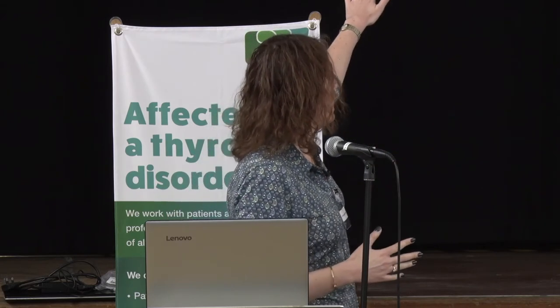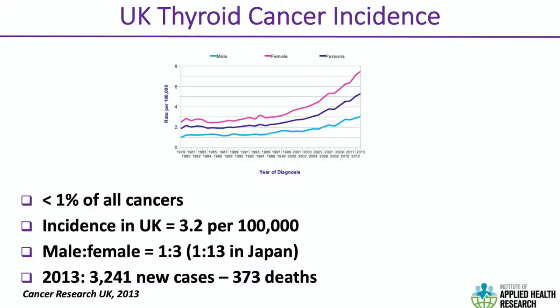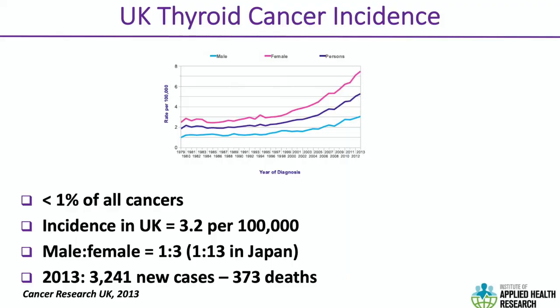These are data from Cancer Research UK. You can see that thyroid cancer incidence is going up quite significantly for both men and women, shown in blue and pink respectively. However, it still represents less than 1% of all cancers. The current incidence in the UK is about 3.2 per 100,000. It is more common in females. In 2013, there were 3,241 new cases, but a relatively low number of deaths from thyroid cancer.